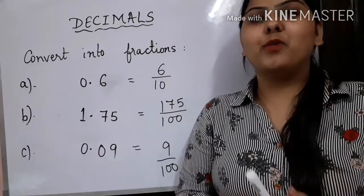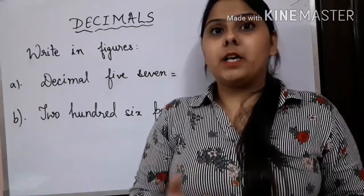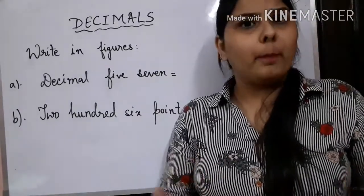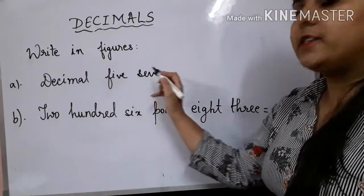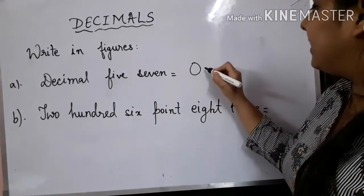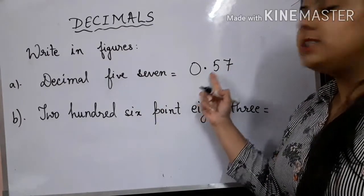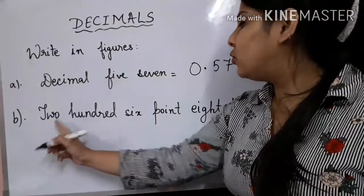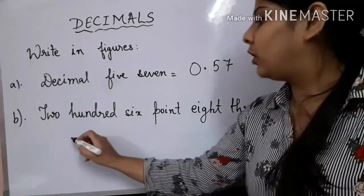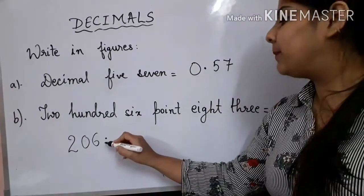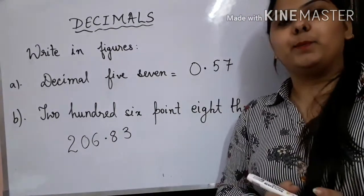I hope you know how to convert a decimal number into its fractional form. But what if I need to do the opposite — represent a number name in figures? Always go by the name. Decimal 5, 7 shows there is no whole part, so my decimal number is 0.57. In the second part, 206 point 8, 3 — the whole part is 206, the point is represented by a dot, and the decimal part is 8, 3, giving us 206.83. In this way, I can represent it in figures.